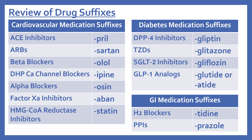Now for a review of the drug suffixes. For cardiovascular medications: ACE inhibitors end in -pril; ARBs end in -sartan; beta blockers end in -olol; dihydropyridine calcium channel blockers end in -ipine; alpha blockers end in -osin — all for high blood pressure. Factor Xa inhibitors end in -aban, which is an anticoagulant or blood thinner. HMG-CoA reductase inhibitors end in -statin, for high cholesterol. For diabetes medications: DPP-4 inhibitors end in -gliptin; TZDs end in -glitazone; SGLT2 inhibitors end in -gliflozin; GLP-1 analogs end in -glutide or -atide.